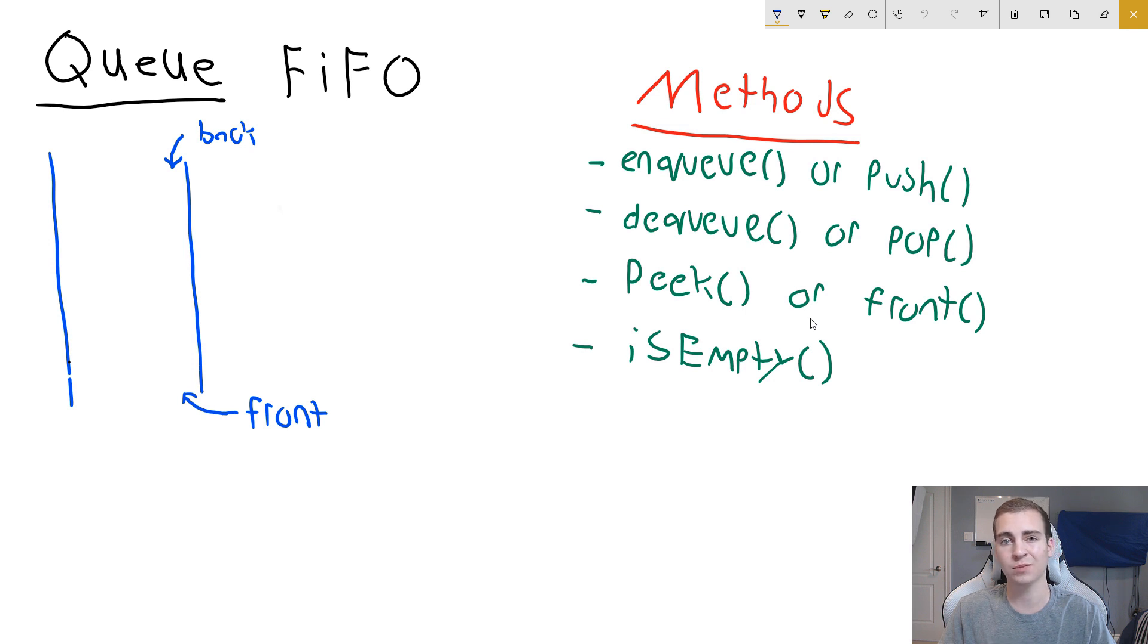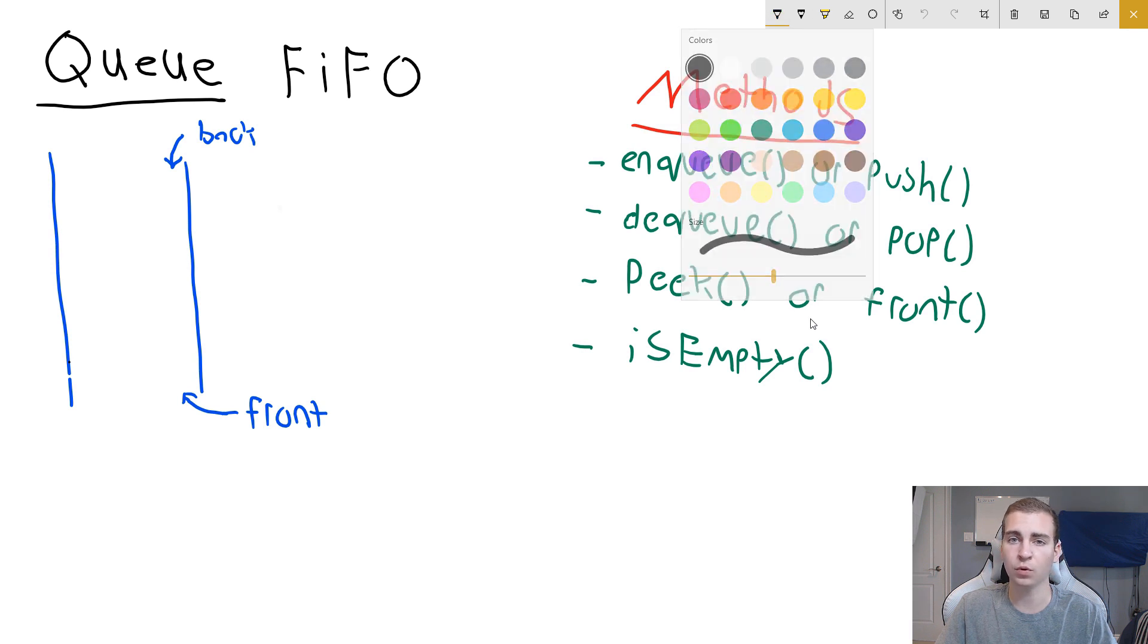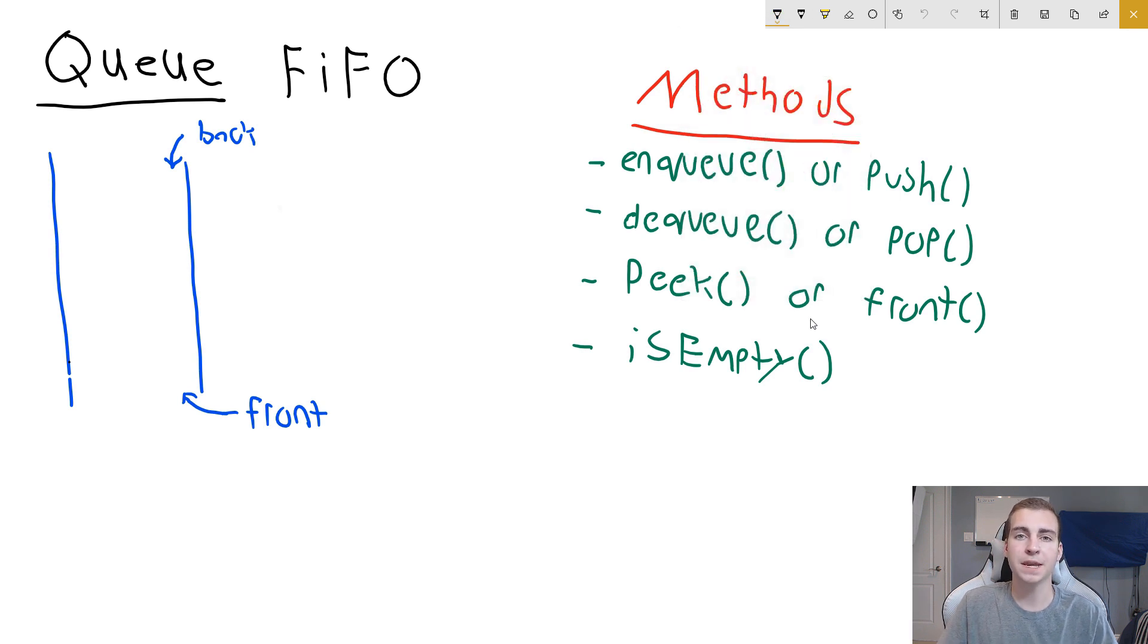So without further ado, let's get started talking about queues. Now what is a queue? Well, chances are you have probably been in a queue before or heard of a queue. The most basic example of a queue is something like a line. So let's say we have three blobs down here, and they're waiting in line to go to the cash. Let's say maybe they're at a store, there's one cash, and they're waiting to buy some items.